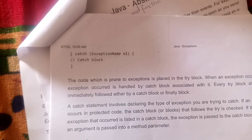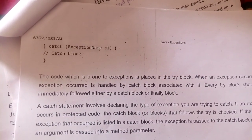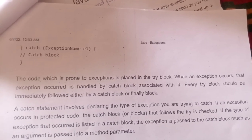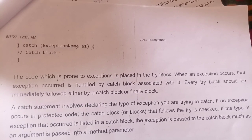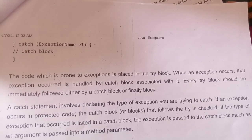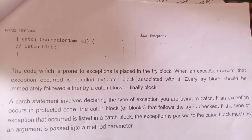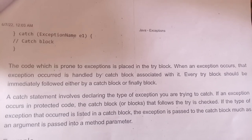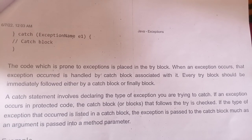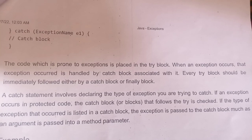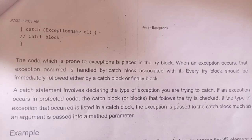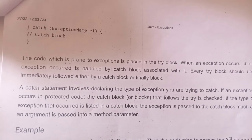Catch exception name E1, catch block. The code which is prone to exception is placed in the try block. When an exception occurs, that exception is handled by the catch block associated with it. Every try block should be immediately followed either by a catch block or a finally block. A catch statement involves declaring the type of exception you are trying to catch. If an exception occurs in protected code, the catch block that follows the try is checked. If the type of exception that occurred is listed in a catch block, the exception is passed to the catch block, much as an argument is passed into a method parameter.